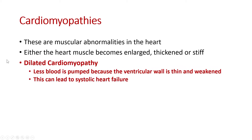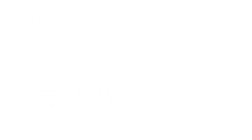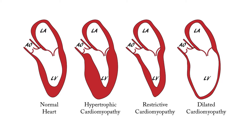Dilated cardiomyopathy is where less blood is pumped because the ventricular wall is thin and weakened — this can lead to systolic heart failure. Conversely, hypertrophic cardiomyopathy is where less blood is pumped because the ventricles can't relax fully and are thickened — this leads to diastolic heart failure. Looking at the diagram: on the left is a normal heart; with hypertrophic cardiomyopathy the cardiac muscles are thickened, reducing ventricular volume; with dilated cardiomyopathy the chamber may be larger but muscles aren't strong enough to pump effectively.